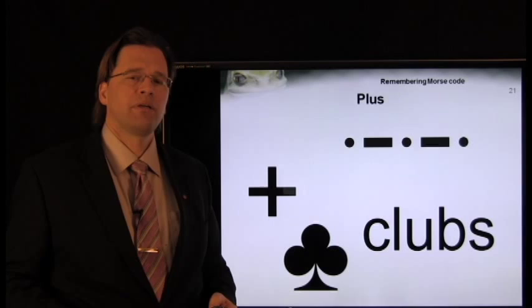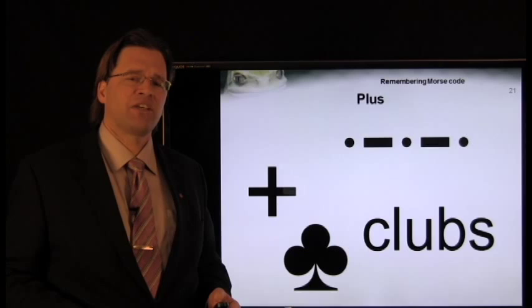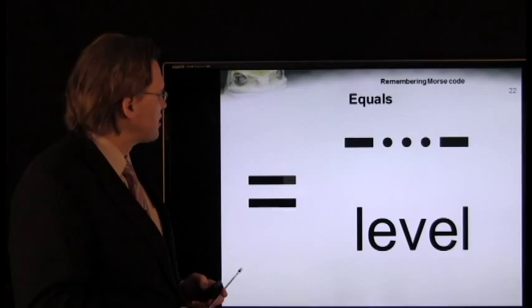The plus symbol does vaguely represent the shape of the club's suit. If two things are at the same height, they are level. So if they have equal height, they are level.